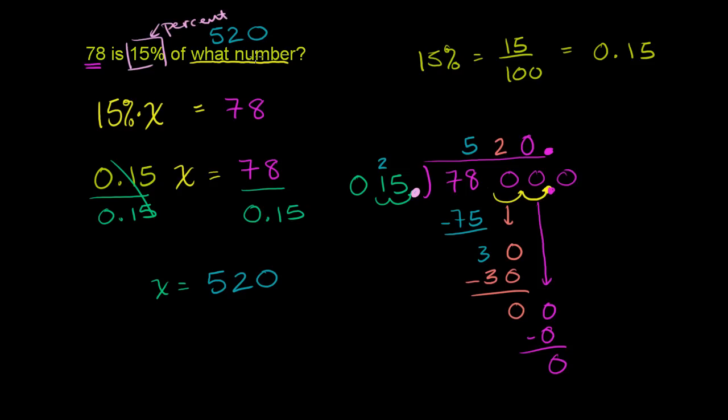520, or the what number before we figured out it was 520, that's what we're taking the percentage of. This is sometimes referred to as the base. And then when you take some percentage of the base, you get what's sometimes referred to as the amount. So in this circumstance, 78 would be the amount. You could view it as the amount is the percentage of the base, but we were able to figure that out.